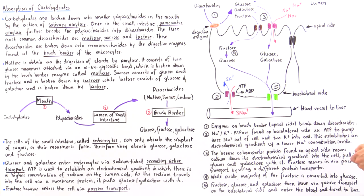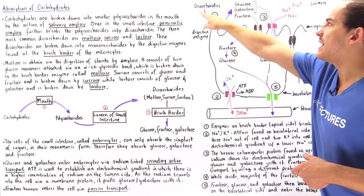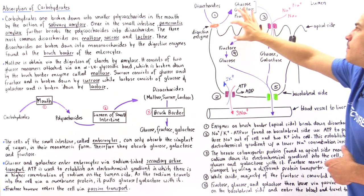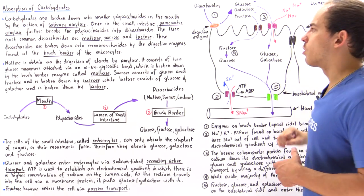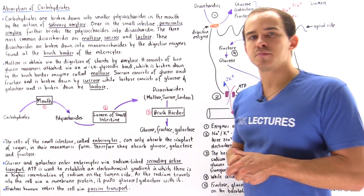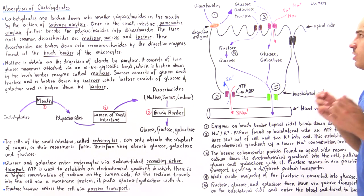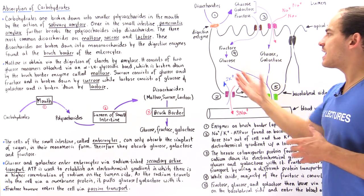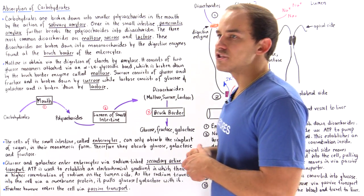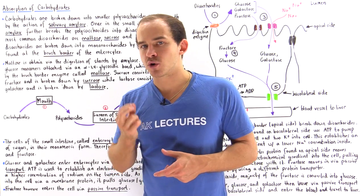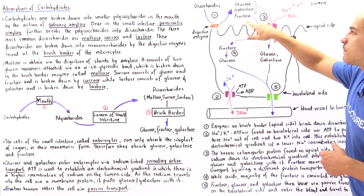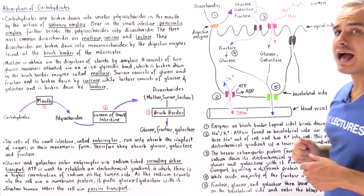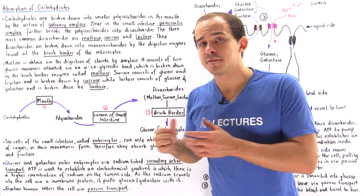Once we break down the disaccharides into glucose, galactose, and fructose on the microvilli at the brush border of enterocytes, how exactly do we transport them into the cytoplasm of enterocytes? We have two modes of transportation: fructose follows one pathway while glucose and galactose follow a different pathway.